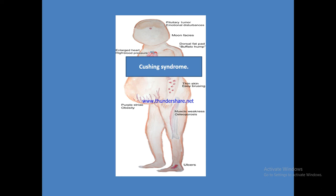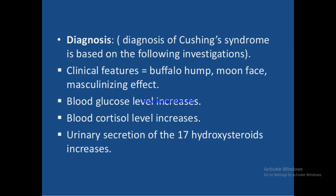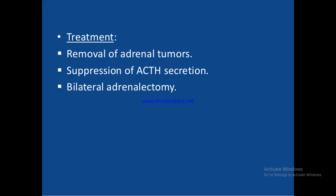When glucocorticoids are reduced in the body, the resulting condition is known as Addison's disease. In Addison's disease, production of all adrenal hormones — both glucocorticoids and mineralocorticoids — is reduced. The withdrawal of cortisol and aldosterone effects leads to hypovolemia, low muscle tone, low blood pressure, dehydration, and weight loss.